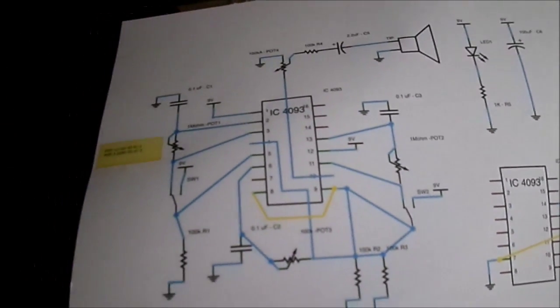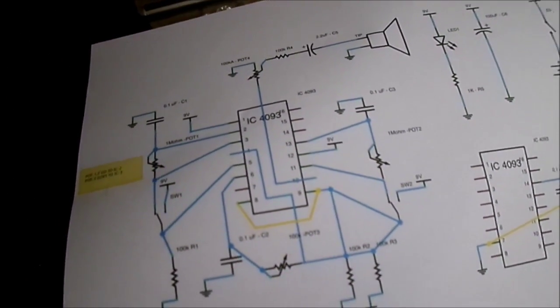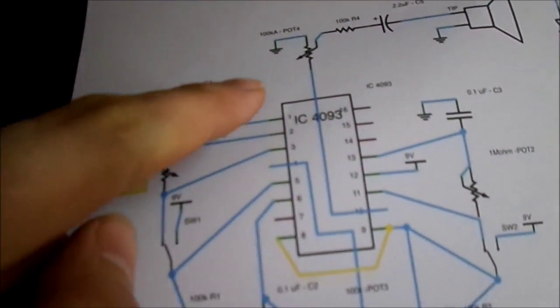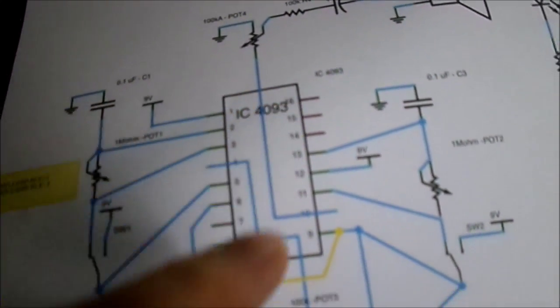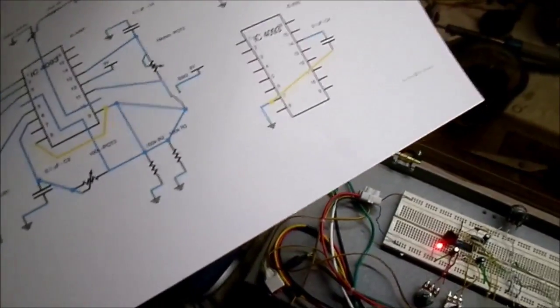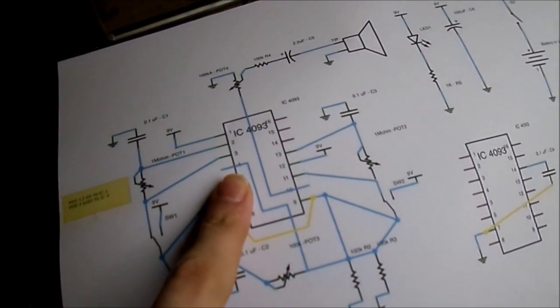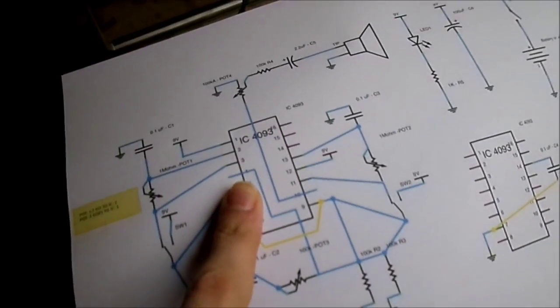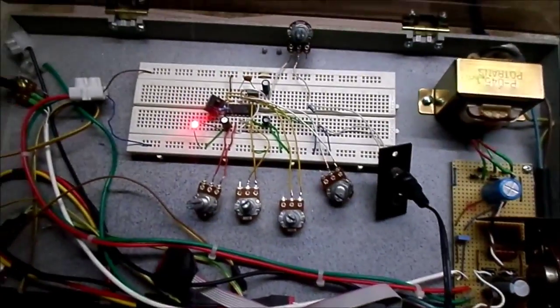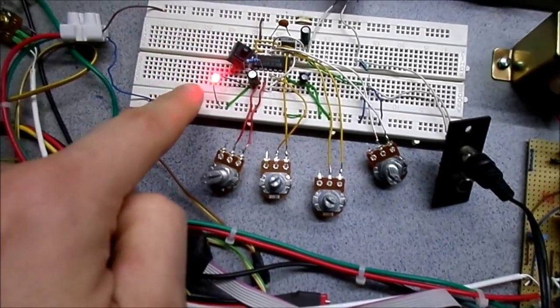It's a four in one Schmitt trigger chip, the 4093. They're pretty dirt cheap. You can get CMOS versions, this is not a CMOS version. They go up to about 15 volts, we're running nine right now.